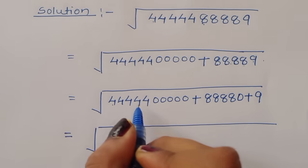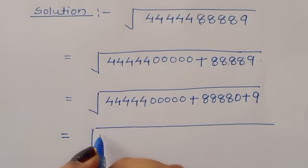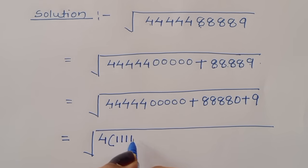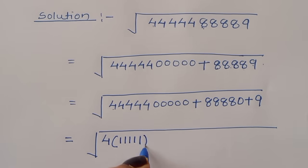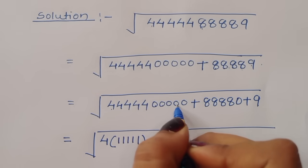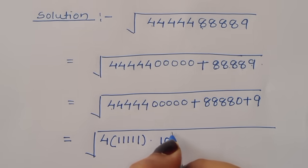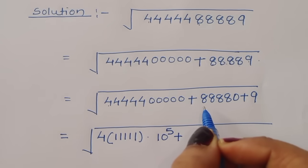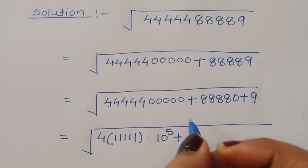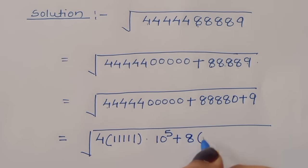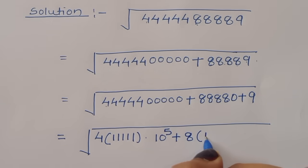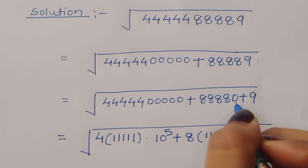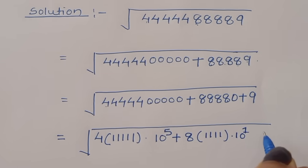Now we can take common 4 here: 4 times 12345, and we can write this as 10 raised to 5. Again here we can take common 8, so when we take common 8, we can write this into 10, so 10 raised to 1.